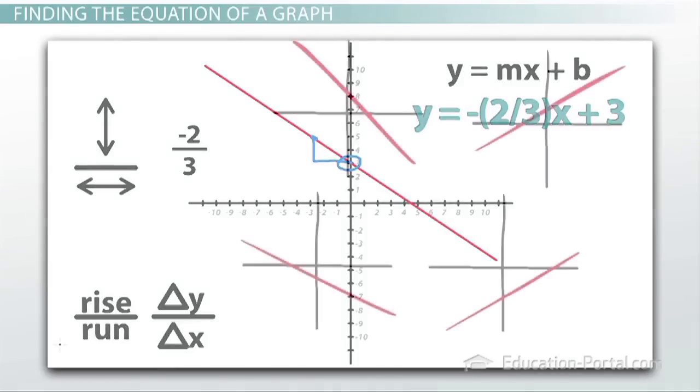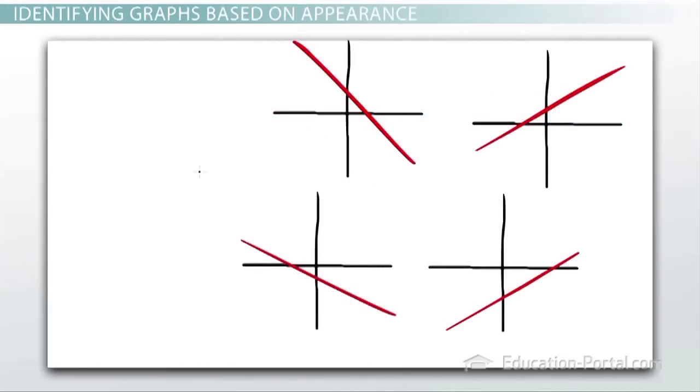This next question is a really good example of a more abstract question. It simply tells us that if we have a line that's written in y equals mx plus b form, and my m value is greater than 0, therefore it's positive, and my b value is less than 0, which makes it negative, which one of these graphs must my line be? So we're not going to plug in any numbers and simply do a bunch of operations and eventually end up with an answer, what I might call plug and chug.